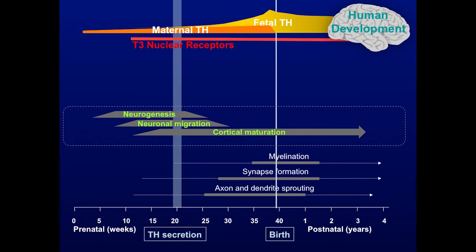Thyroid hormone receptors are present in the brain, as we demonstrated already many years ago in the human brain — the receptor protein, not the mRNA. The receptor protein before week 10 of development is very low and increases very fast between week 10 to week 20. So this is a period of very critical development in the human brain and is probably under control by the maternal thyroid hormone.